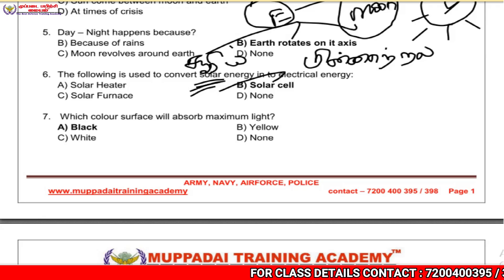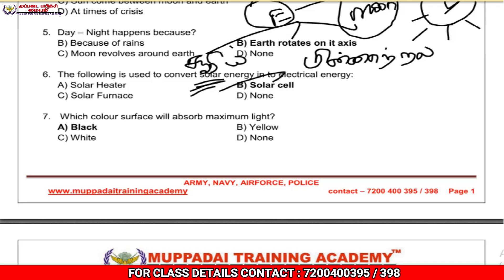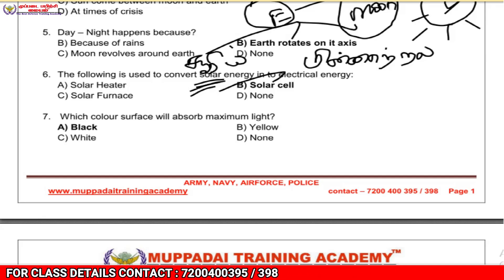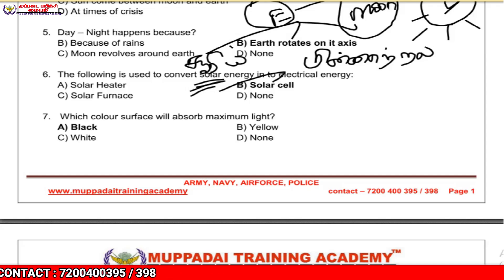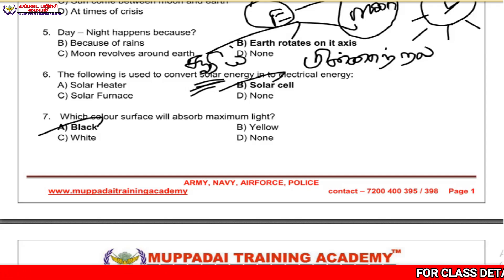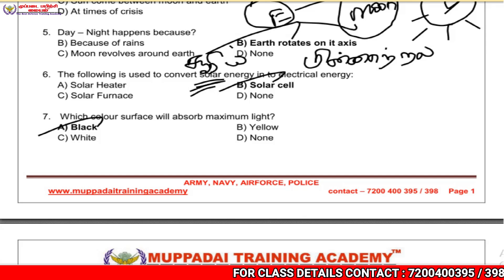Which color surface will absorb maximum light? The answer is black. Black absorbs the maximum light and therefore produces more heat.